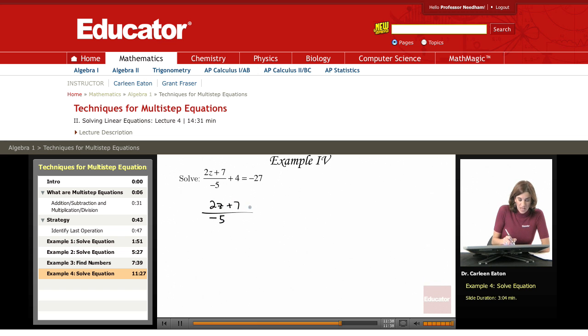2z plus 7 divided by negative 5 plus 4 equals negative 27. So the last operation performed was to add 4.